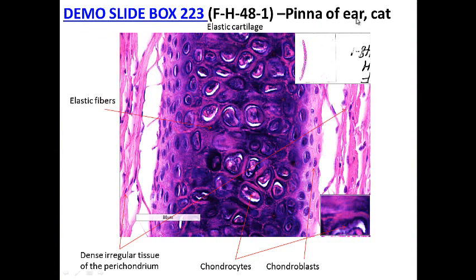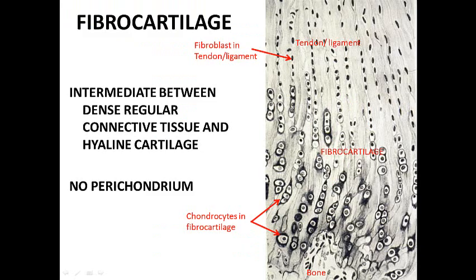Looking at the outer ear, we can see epithelium — skin — on both sides of the ear. The elastic cartilage looks similar to hyaline cartilage but the isogenic groups are not as big, and there are elastic fibers in between. In a section of a cat's ear stained to show elastic fibers, you can see blue elastic fibers and chondrocytes trapped in their lacunae. Right at the edge of the perichondrium and cartilage are the chondroblasts, which grow by appositional growth.